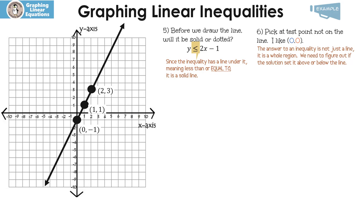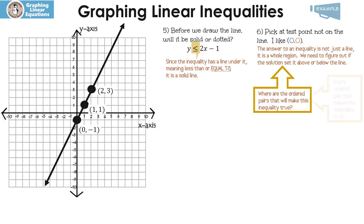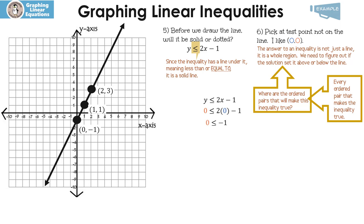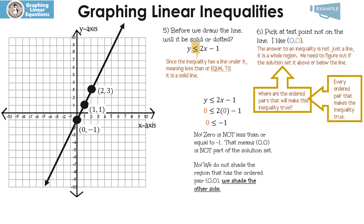0, 0 is always the easiest test point unless it's on the line. Basically, we want to know where the ordered pairs are that will make this inequality true — that's the region. Every ordered pair that makes the inequality true is in that region. So here's my inequality. I'm going to put 0, 0 in: 2 times 0 is 0, so 0 is less than or equal to negative 1. Is that true? No, that's not true. 0 is not less than or equal to negative 1, which means 0, 0 is not part of the solution set. So we do not shade the region that has the ordered pair 0, 0.